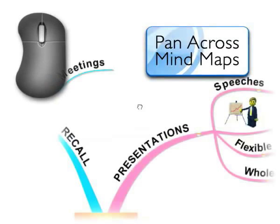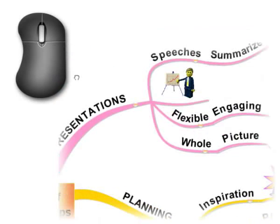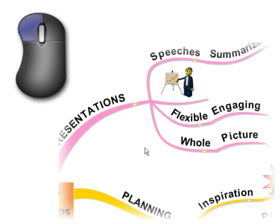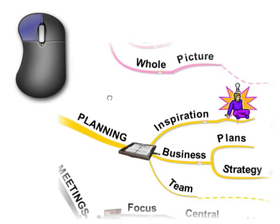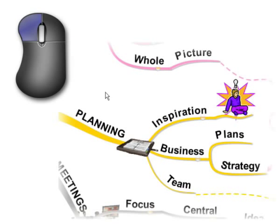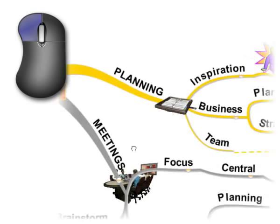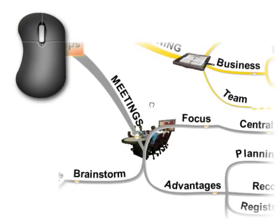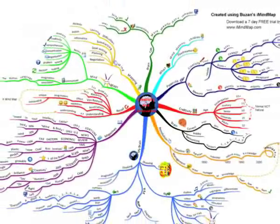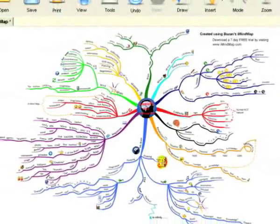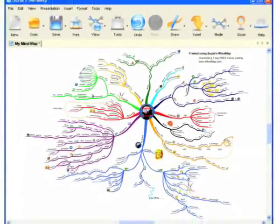To pan across your mind map, simply click and drag on any of the white space in the work area. Unclick when you have reached the part of your mind map that you would like to see or work on. iMindMap — the ultimate visual thinking tool.